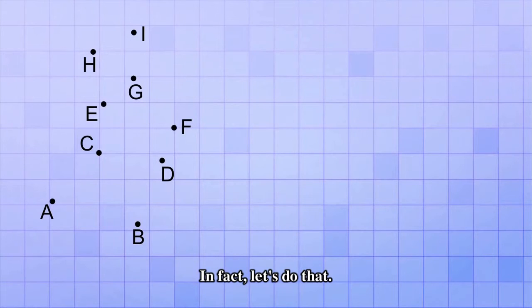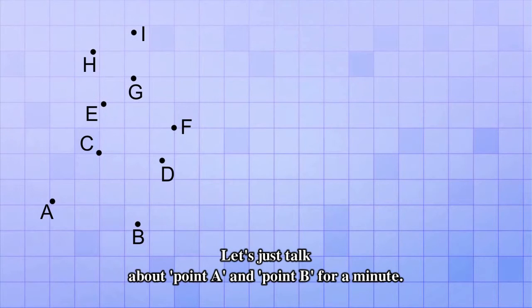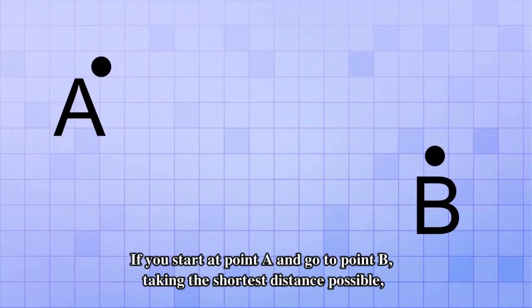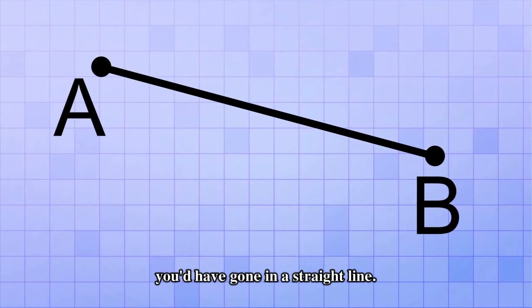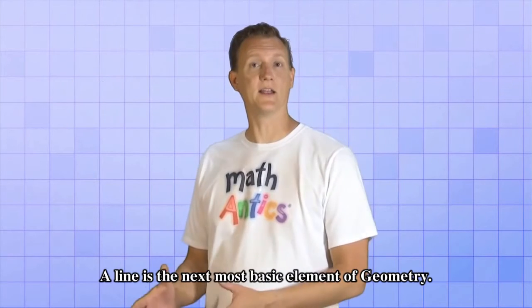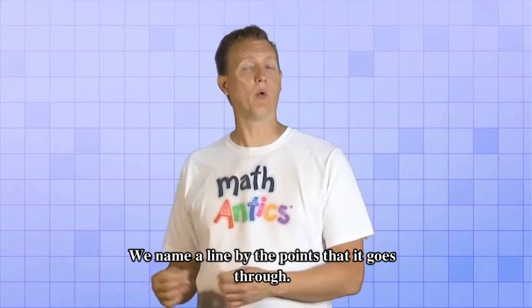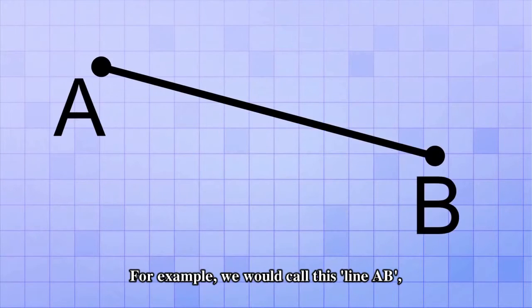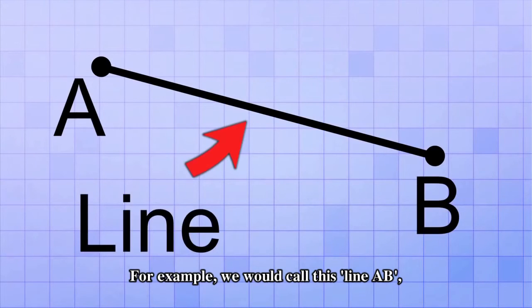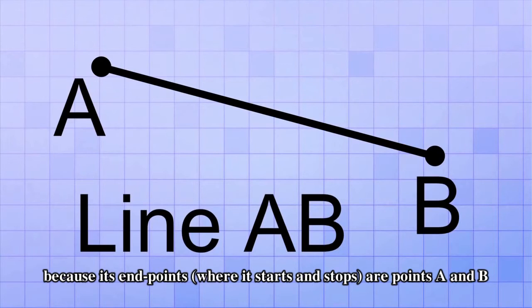In fact, let's do that. Let's just talk about point A and point B for a minute. If you start at point A and go to point B taking the shortest distance possible, you would have gone in a straight line. A line is the next most basic element of geometry. We name a line by the points that it goes through. For example, we would call this Line AB because its endpoints, where it starts and stops, are points A and B.